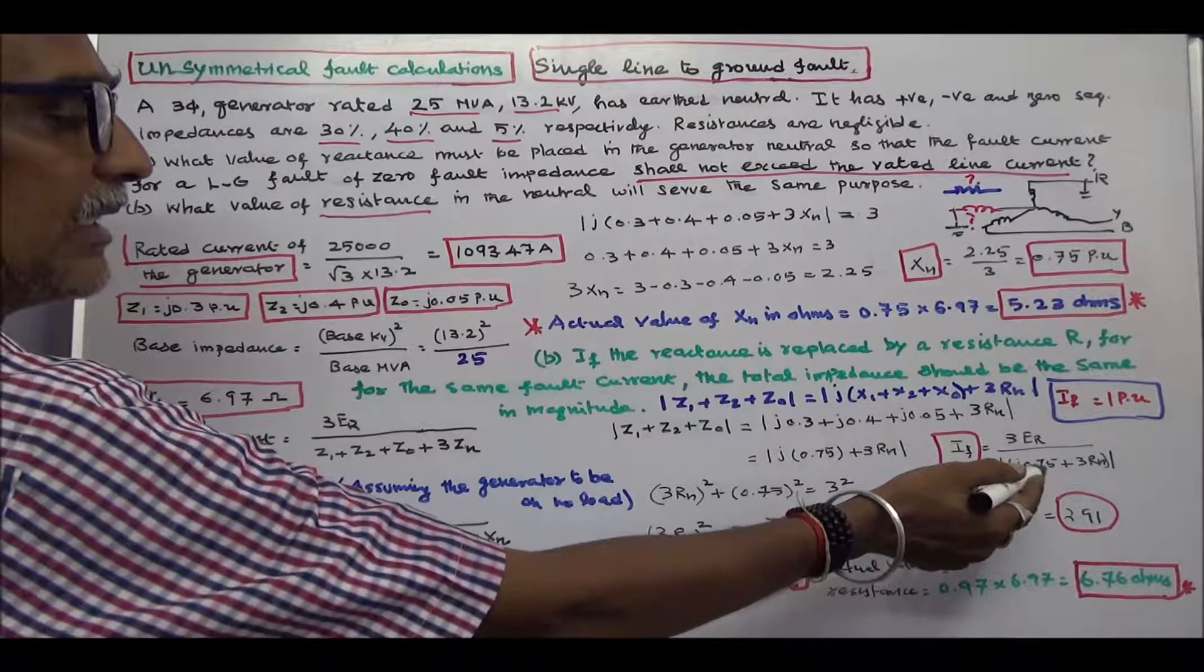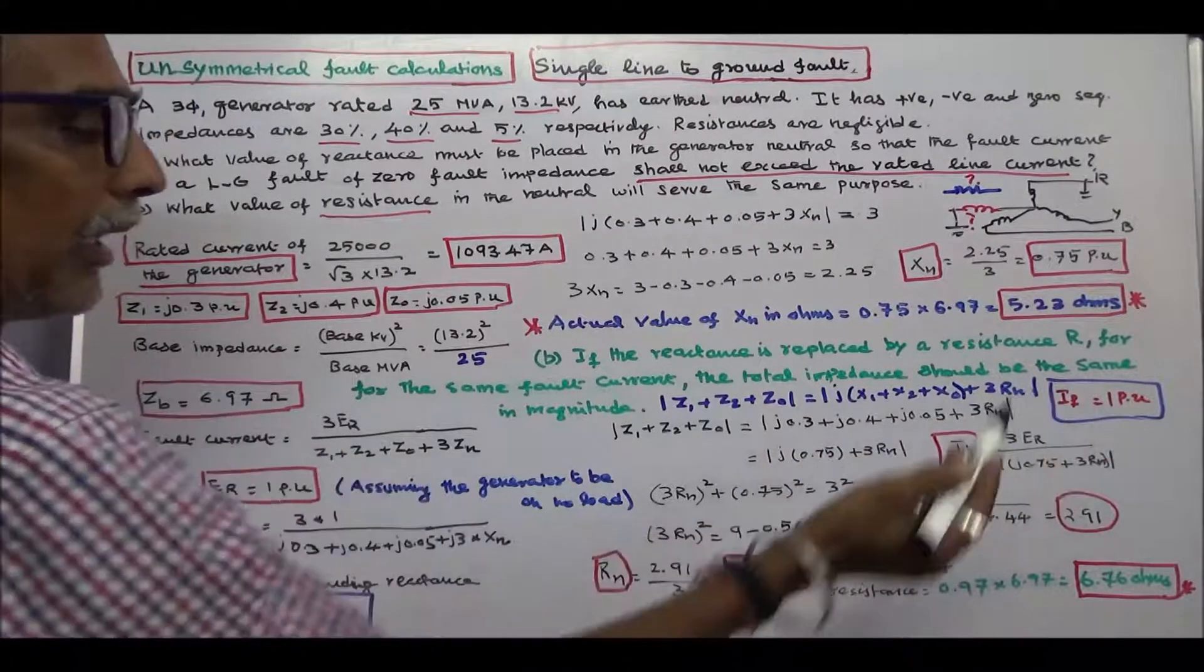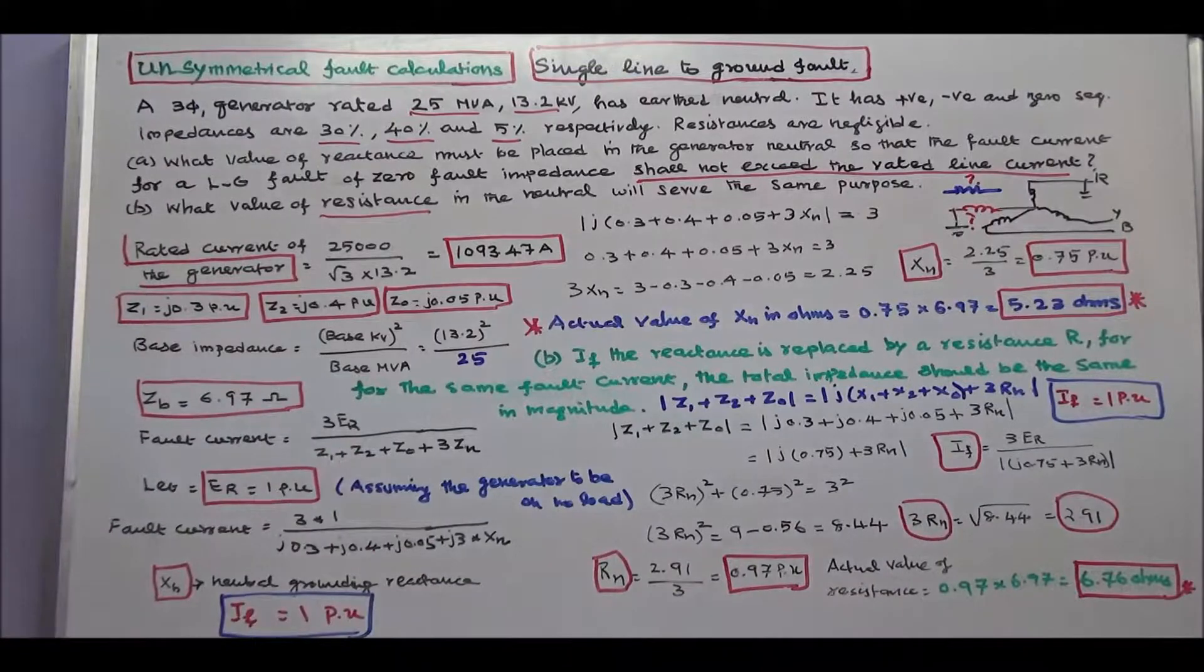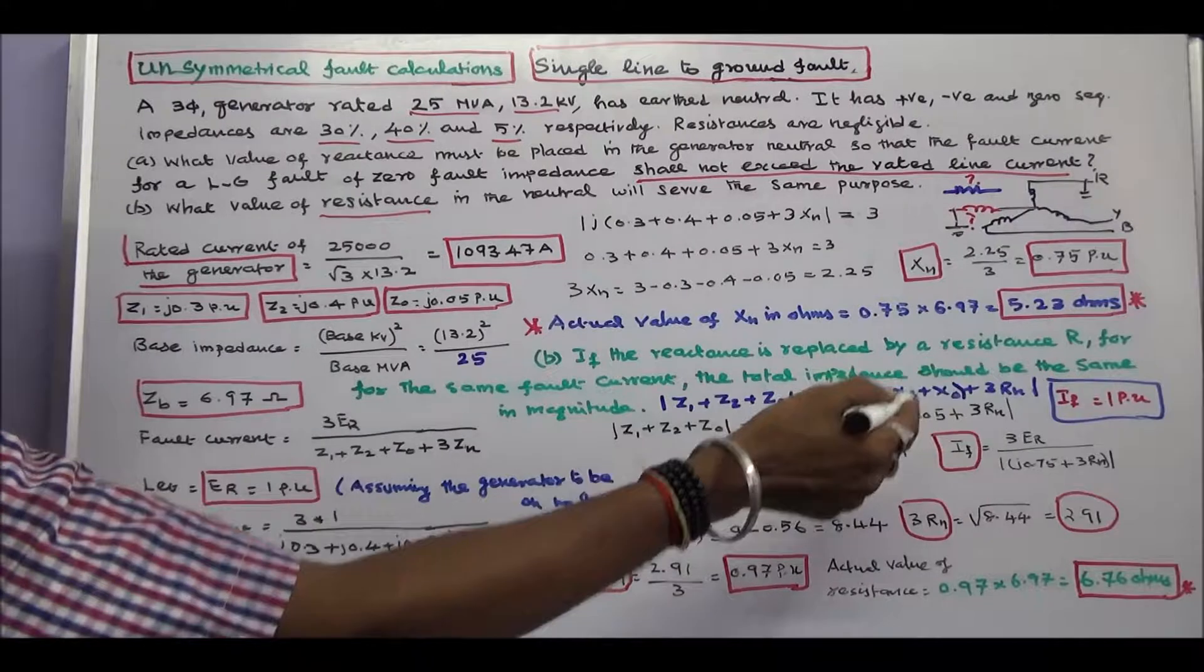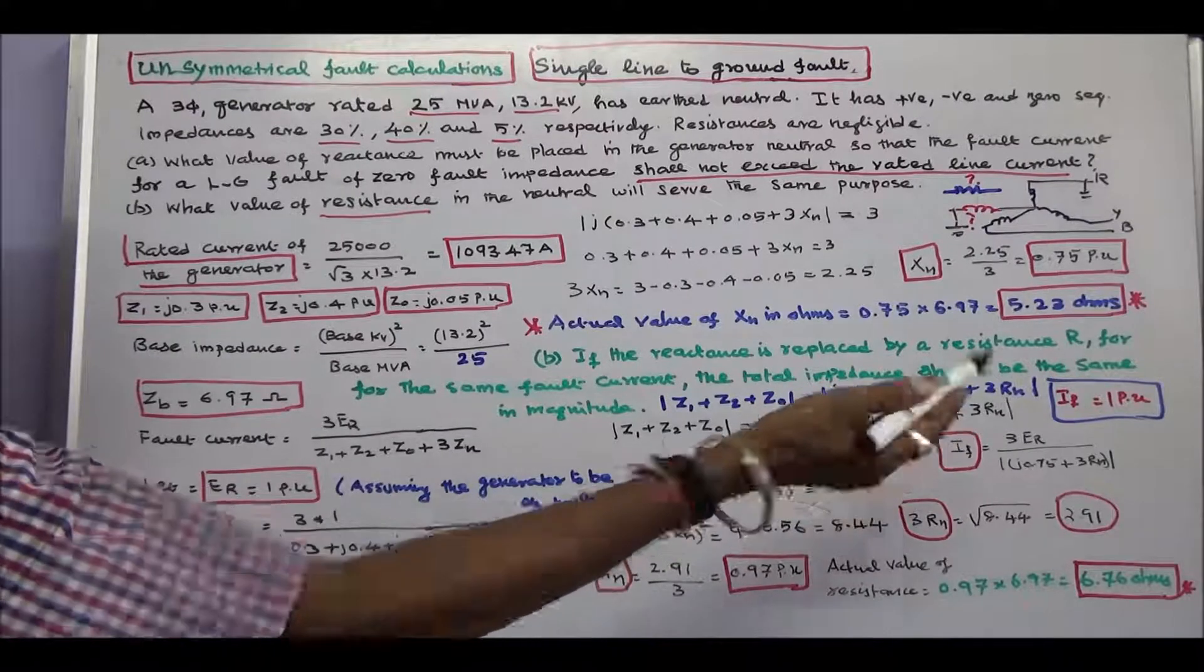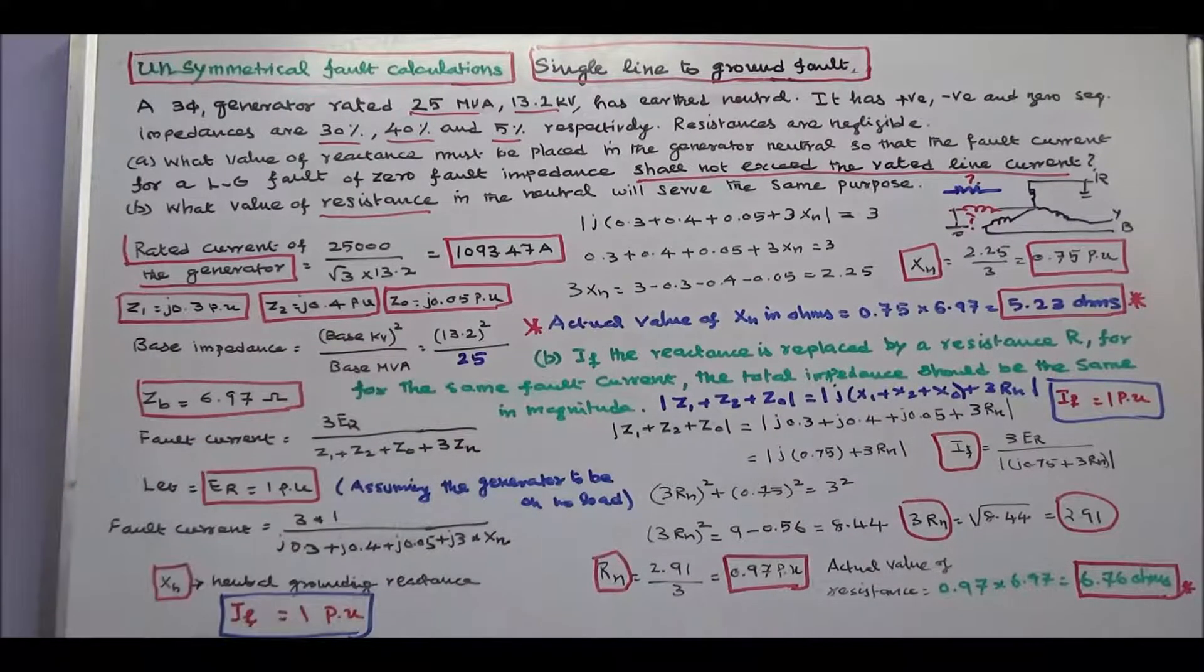Now I can calculate 1 is equal to 3 into 1, that is 3 divided by modulus of j0.75 plus 3 into Rn. I simplify the equation.